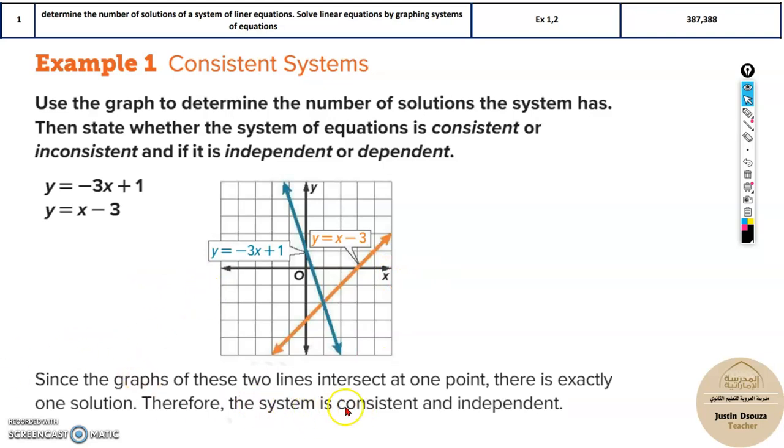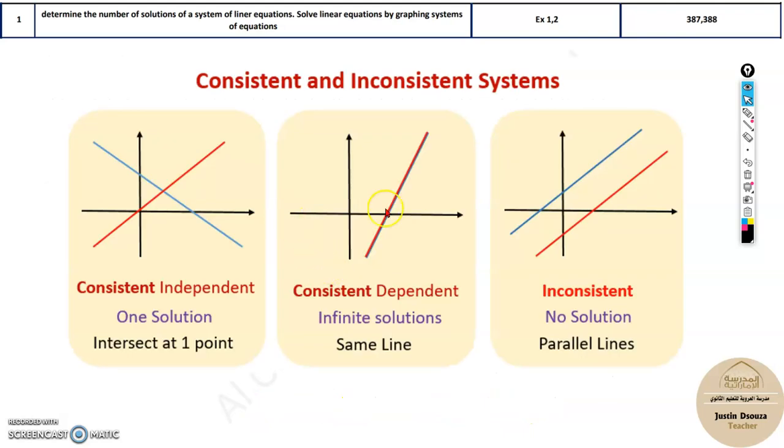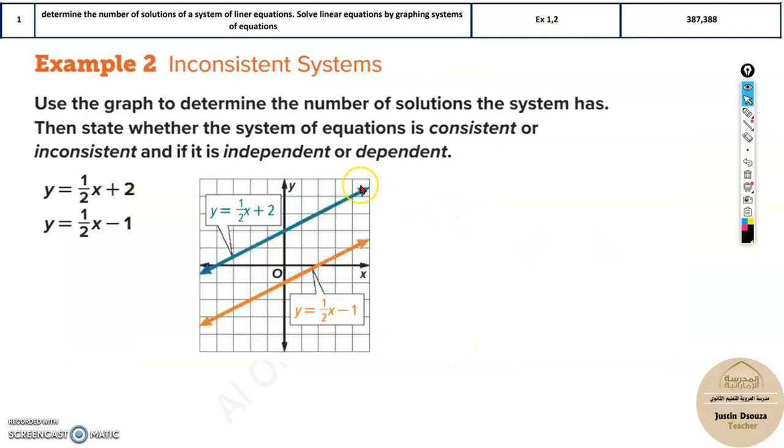The system is consistent and independent. Now here, you can see they're not touching because they're parallel lines. An easy way to understand parallel lines is when it's in slope-intercept form: the slopes will be the same, only the y-intercepts are different. Whenever the slopes are same and the y-intercepts are different, you understand that's a parallel line.